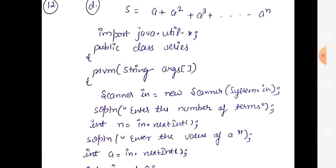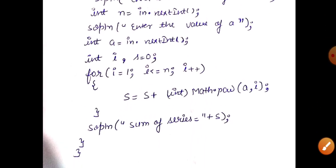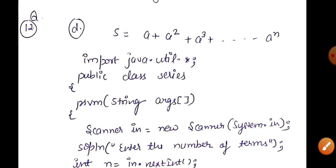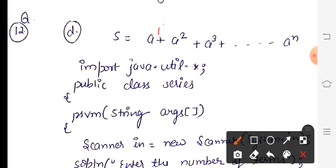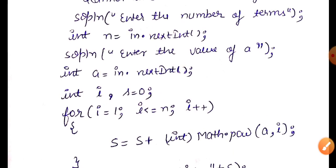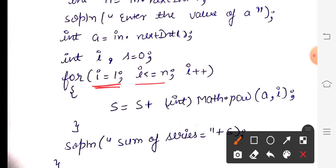We take one variable s, initialized to 0, and i to run the loop. Look at the pattern again — powers go 1, 2, 3, 4, 5. We start from 1 and go up to n, incrementing by 1 — so i++ or i = i+1. Run the loop: i = 1, condition i <= n, increment i++.